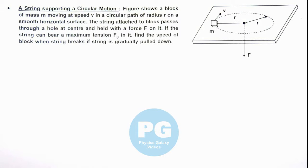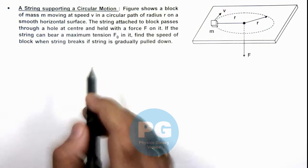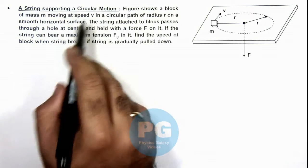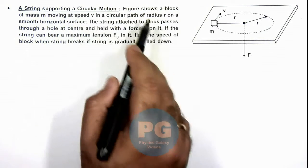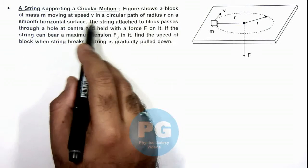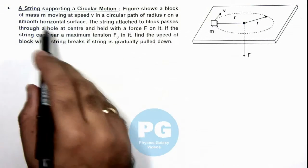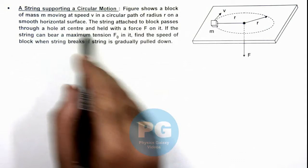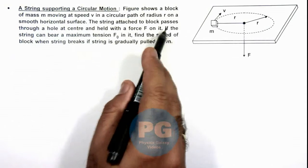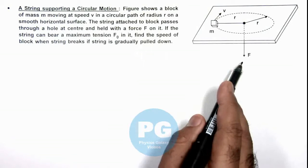In this illustration, we'll analyze the situation when a string is supporting a circular motion. Here the figure shows a block of mass m moving at speed v in a circular path of radius r on a smooth horizontal surface, and the string attached to block passes through a hole at center.